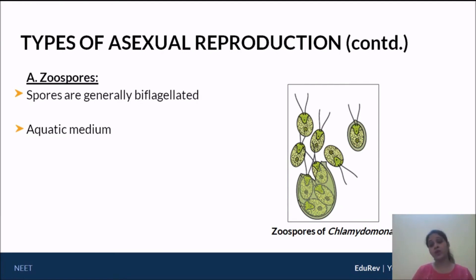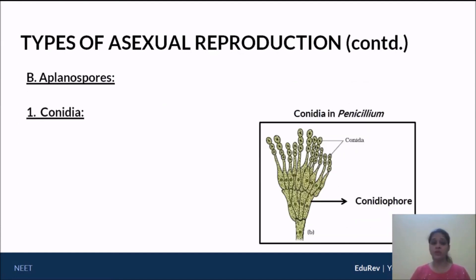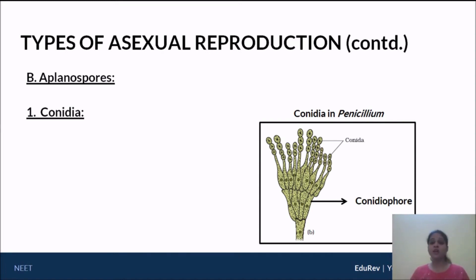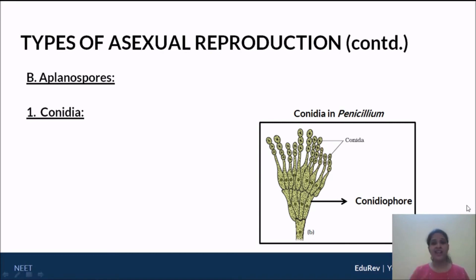Now what we really need to focus on are the types of aplanospores. Generally speaking, there are two types of aplanospores that we study. One is called conidia and the other is called sporangiospores. We need to understand the differences between conidia and sporangiospores. Conidia is the type of spore often seen in kingdom Fungi. You have already studied the different parts of a fungus — hyphae, mycelium, etc.